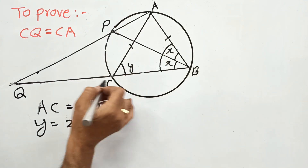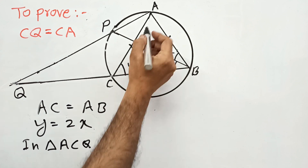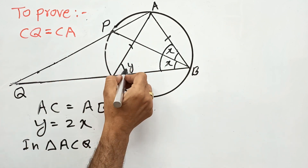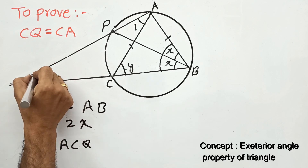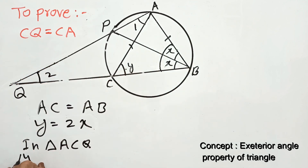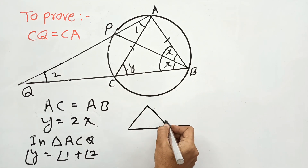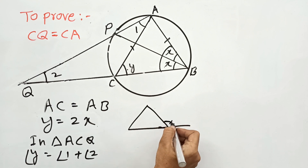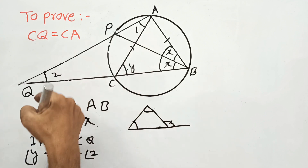Since AC equals AB, we can write Y is equal to this angle, which means Y equals 2X. Now, in triangle ACQ, using the exterior angle property: Y is equal to angle 1 plus angle 2. The exterior angle property states that the exterior angle of a triangle equals the sum of the two non-adjacent interior opposite angles.